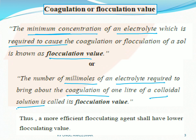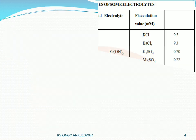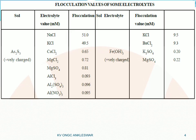An electrolyte with a lower coagulation value has higher coagulating power. For example, NaCl has a flocculation value of 51, whereas aluminum nitrate has a value of 0.095. Since aluminum nitrate has a lower coagulation value, its capacity to discharge and coagulate is much higher — so aluminum nitrate is a more effective coagulating electrolyte for positively charged particles.